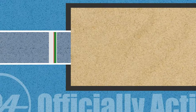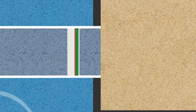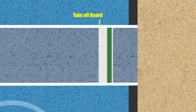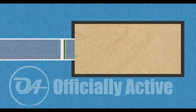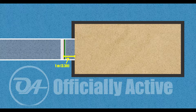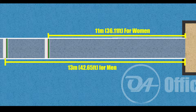The board which you jump from is made of a hard surface, usually white, and it has a soft strip which shows impressions if the jumper steps on it. This soft strip is known as a foul line. For long jump, this board is set 1 meter away from the sand pit edge. For triple jump, it is set at 13 meters for men and 11 meters for women.